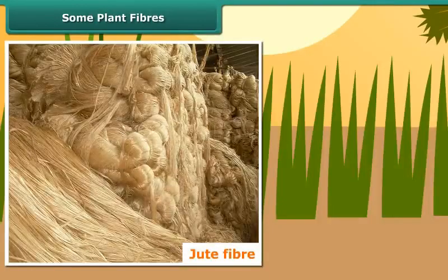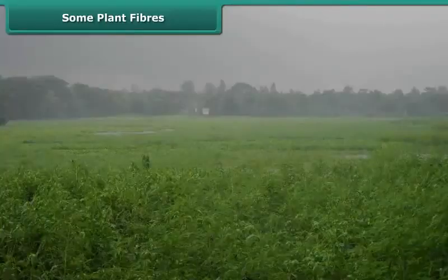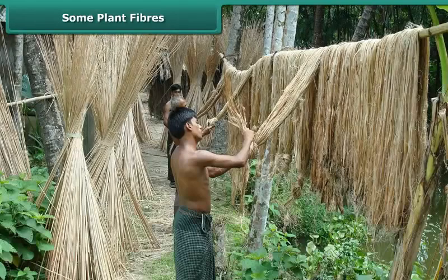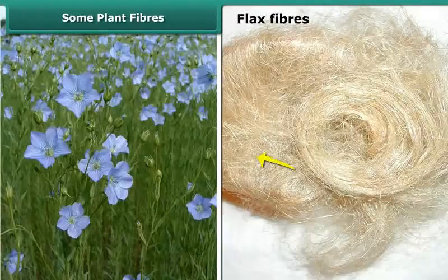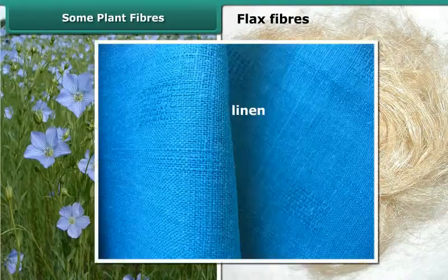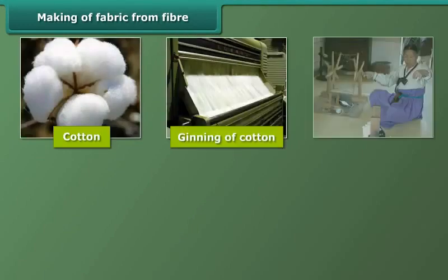Jute fiber is obtained from the stem of the jute plant. It is cultivated during the rainy season. The stems of harvested plants are immersed in water for a few days, then the stems rot and fibers are separated by hand. Flax fibers are also obtained from the stems of the plant and are used mainly to make linen.